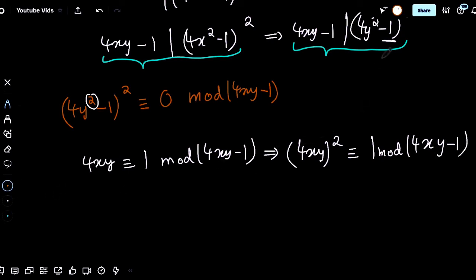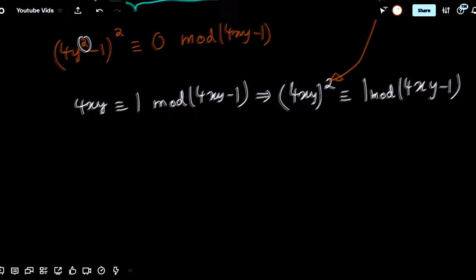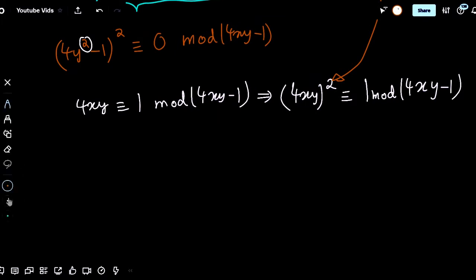Let's replace this 1 with this expression by taking 4y squared minus 1 whole squared modulo 4xy minus 1. That would mean that 4y squared minus 1 whole squared is congruent to 4y squared minus 4xy whole squared whole squared.